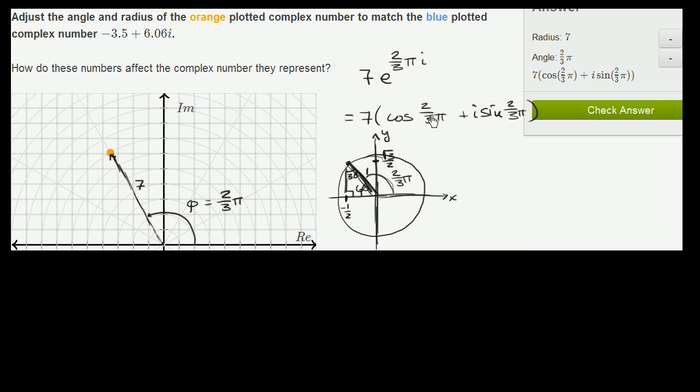So cosine of 2 thirds pi is negative 1 half. So this is going to be equal to 7 times negative 1 half. That's cosine of 2 thirds pi. Plus i times the square root of 3 over 2. So let's verify that that's actually the same thing as that over there. Well, 7 times negative 1 half is negative 3.5.